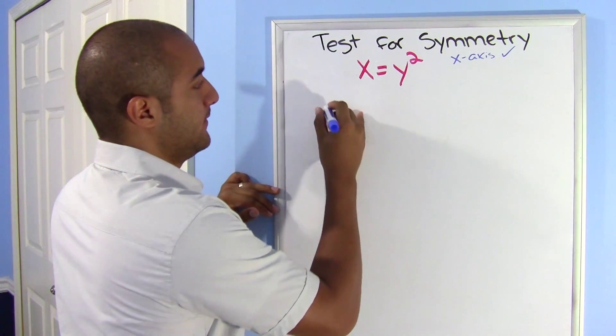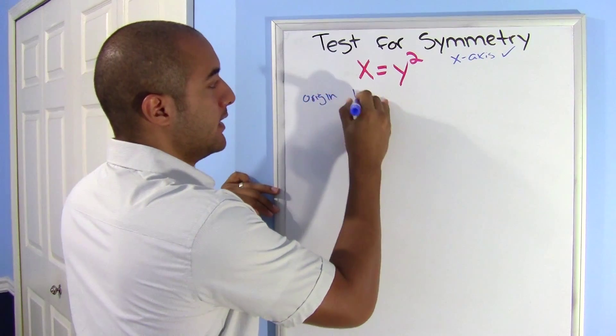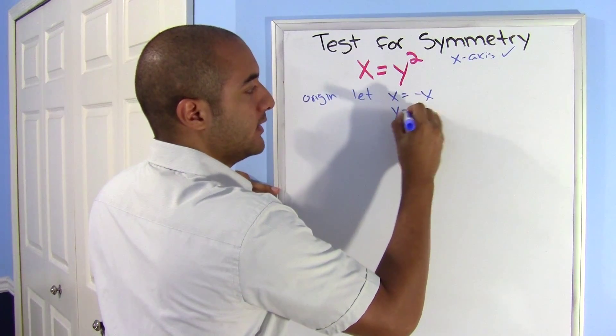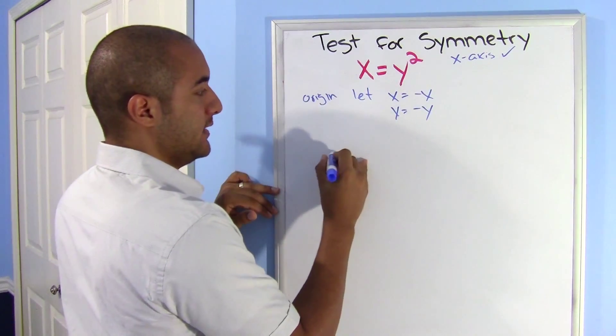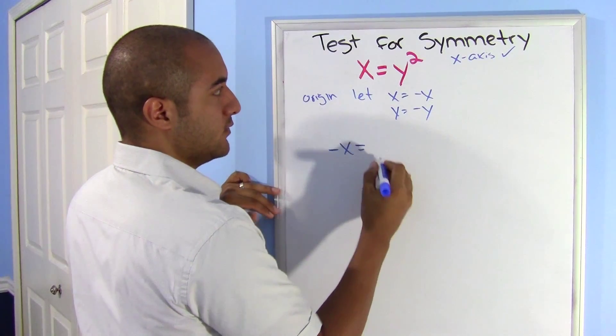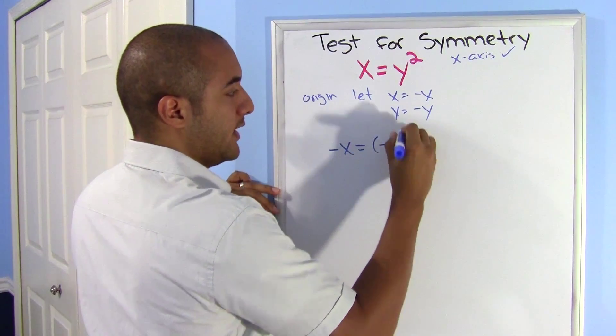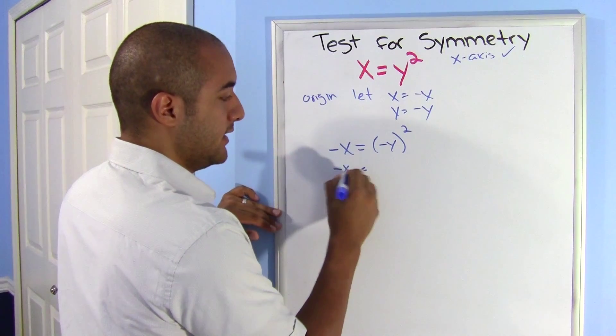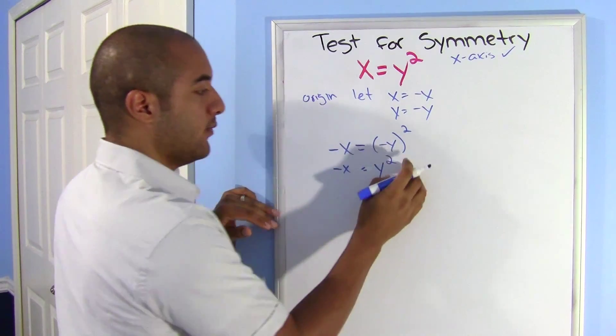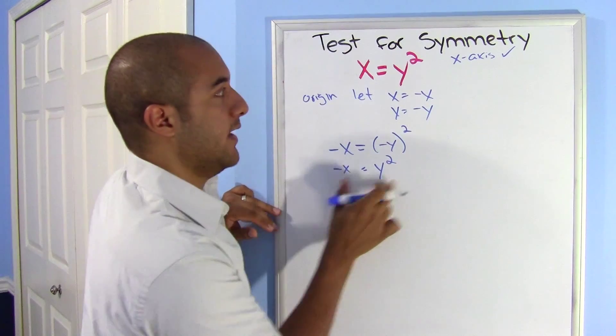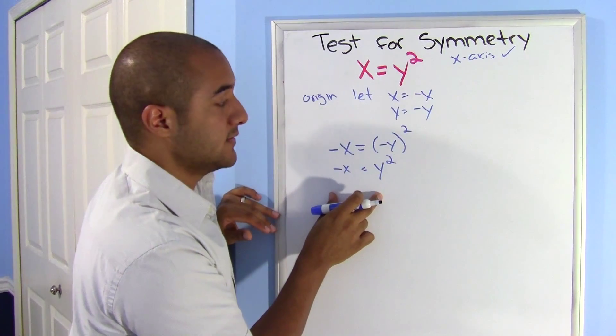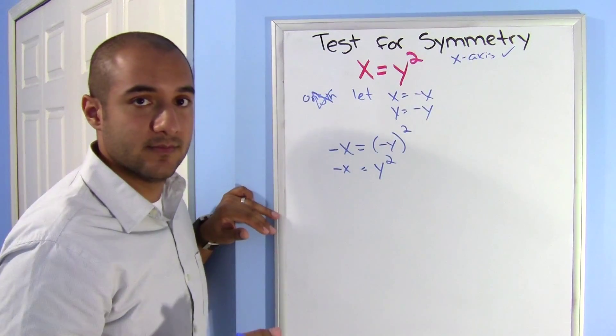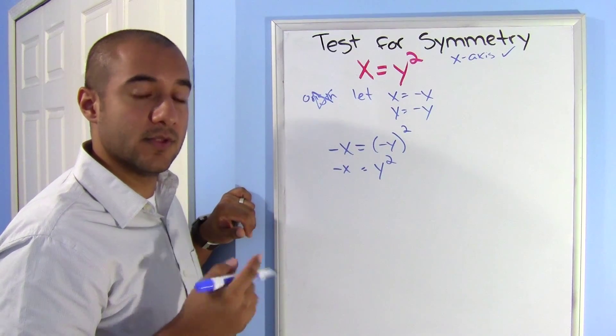Now we'll test the origin. So origin, let x equal negative x and y equal negative y. So this is going to say negative x equals negative y squared. Still nothing is happening here. The only thing that happens is on the right side where you do get y squared. But this is still not the original equation. So this is not symmetric about the origin, only about the x-axis. There. So you have to test all three. Let's look at one more.